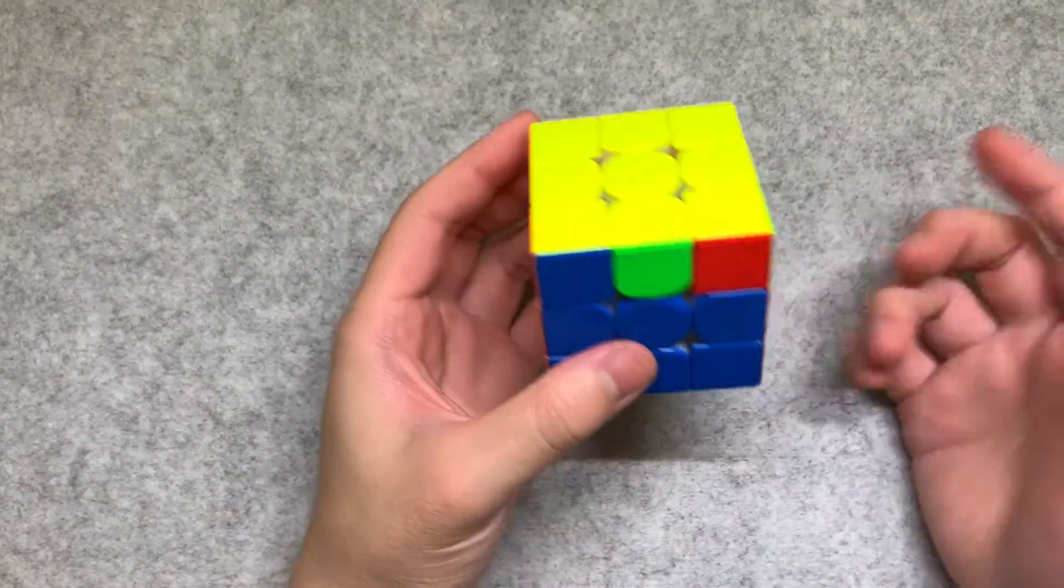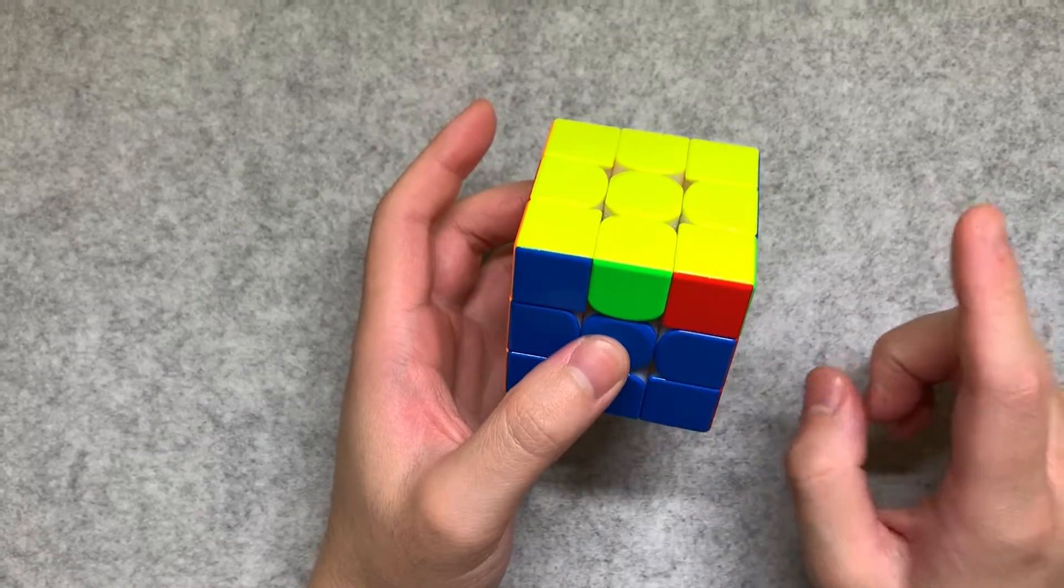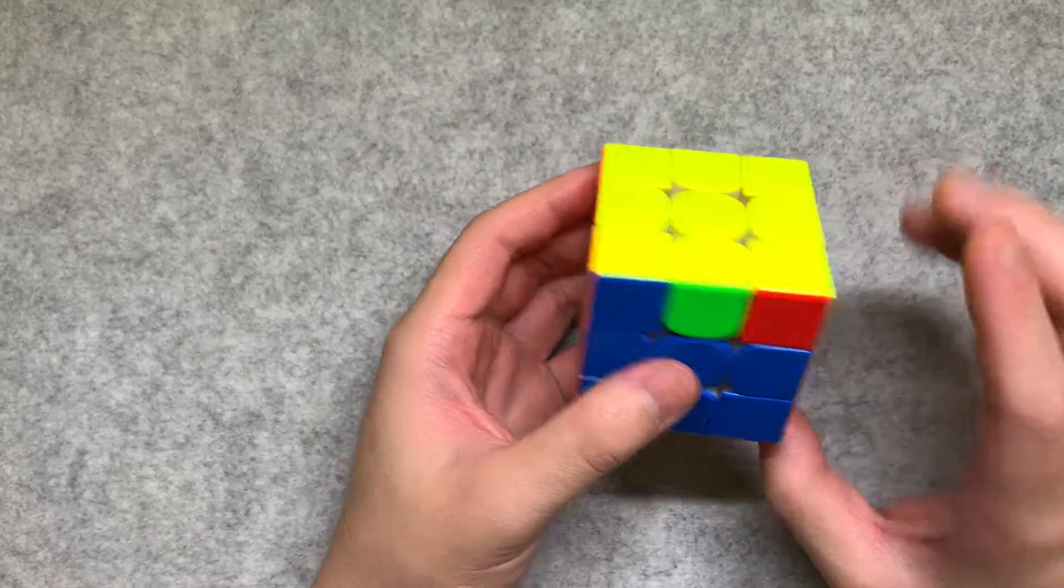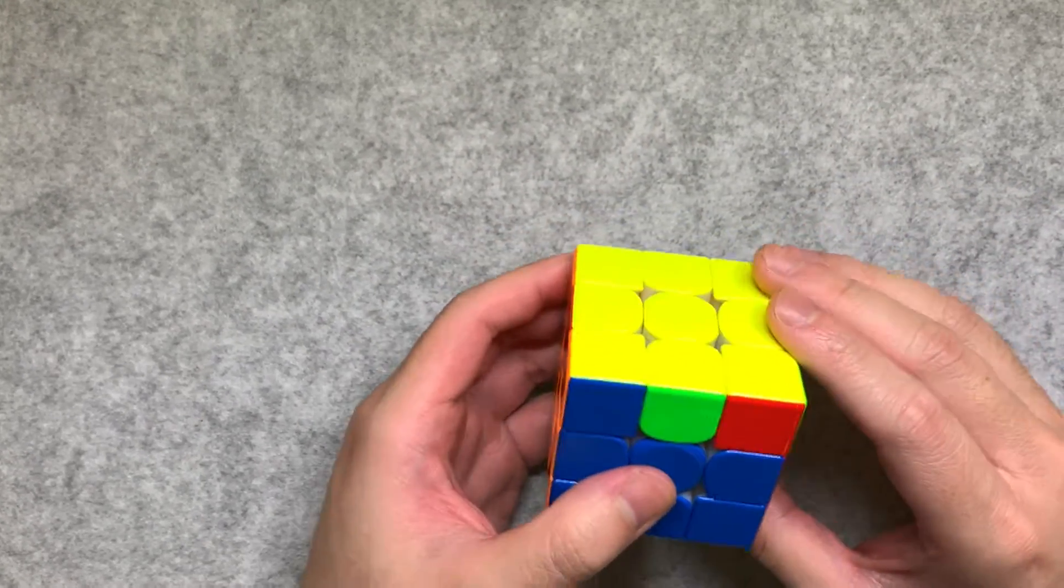So now let's continue to pretty much solving the whole thing. Alright, so now we are on to PLL, which is the last stage. And once again, only using one move being R, let's get into it. So holding it like this, let's do our first R.